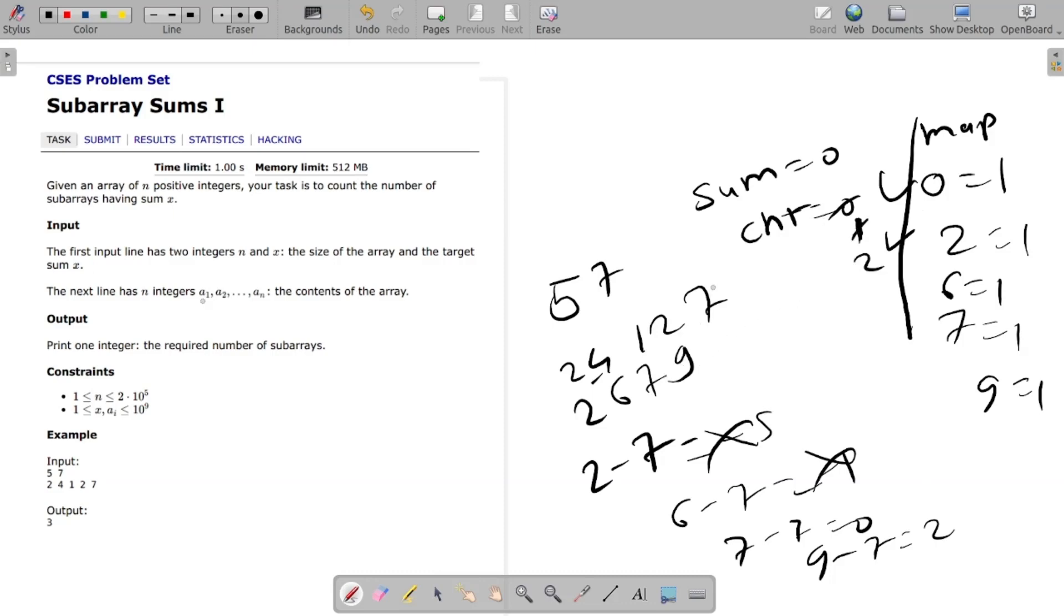Then add 9 plus 7 equals 16. Update in map, check 16 minus 7 present in map, yes. That's when we update our count, that is 3.